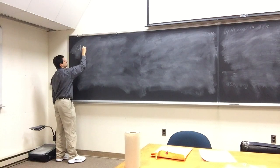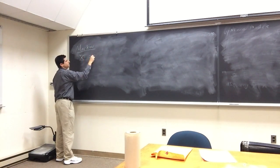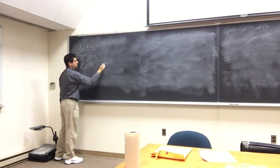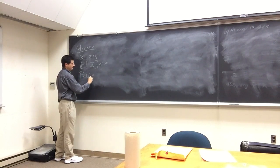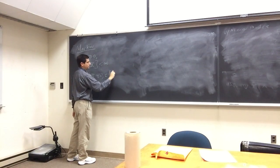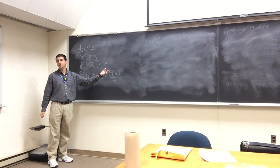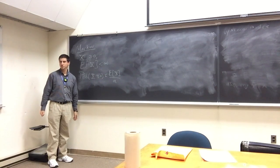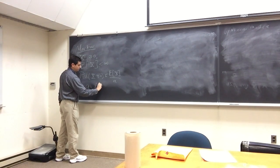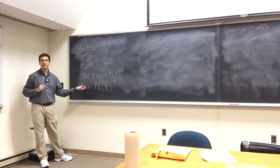Markov's inequality states: we have a non-negative random variable, the expected value of x is finite, and then the probability that x is greater than or equal to a is at most the expected value of x over a. As a gets larger and larger, this bound gets smaller and smaller. You might want to write a as l times the expected value of x, because that's the natural scale — it's the only information given.